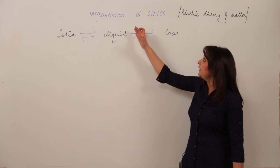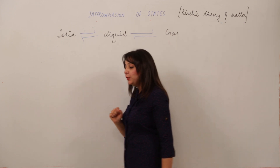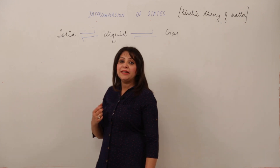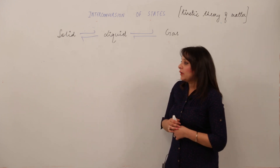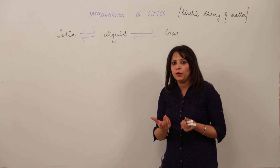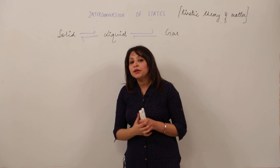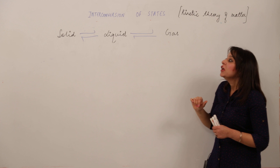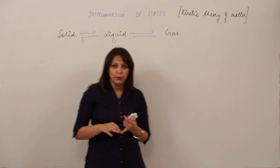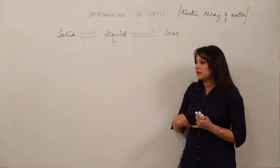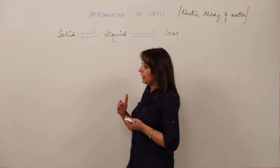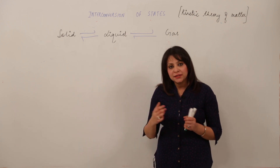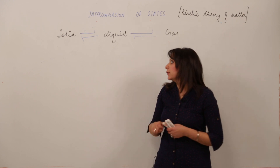We are going to take a new topic: interconversion of states of matter. As I told you in a previous lecture, matter exists in three states — solid, liquid, and gas. These states can be interconverted from one state to another. For example, water exists as ice in solid form, as liquid water at room temperature, and as water vapor in gaseous form. This shows that these states are interconvertible.